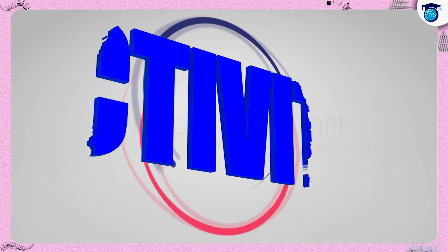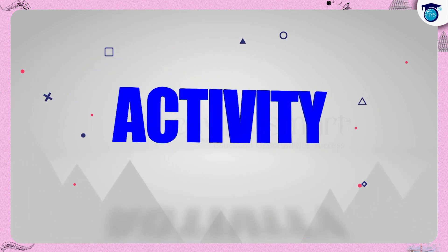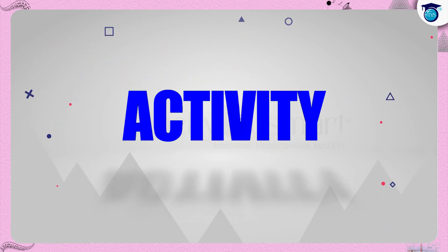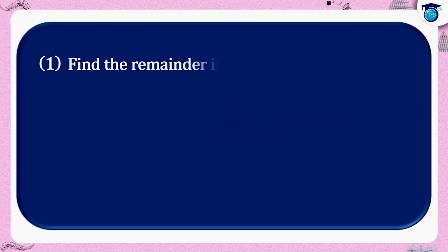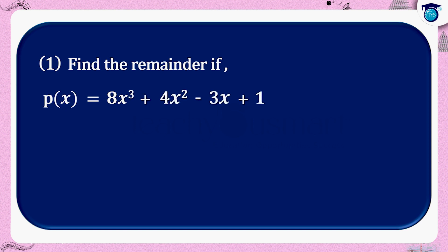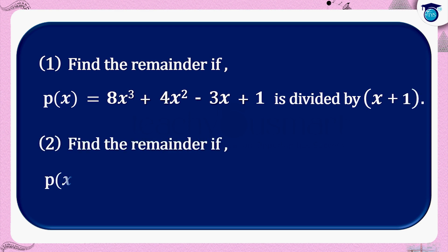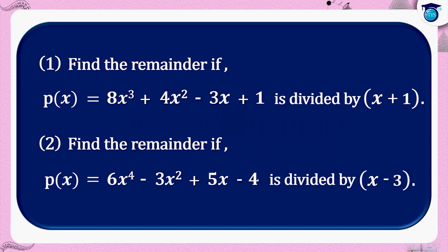Before winding up, let's check how much you understood by doing an activity. First, find the remainder if p of x equals 8x cubed plus 4x squared minus 3x plus 1 is divided by x plus 1. Second, find the remainder if p of x equals 6x raised to 4 minus 3x squared plus 5x minus 4 is divided by x minus 3.